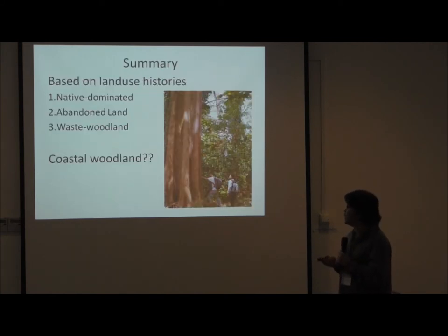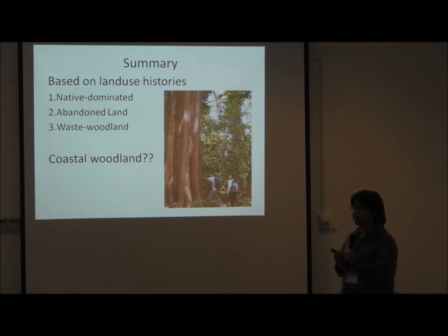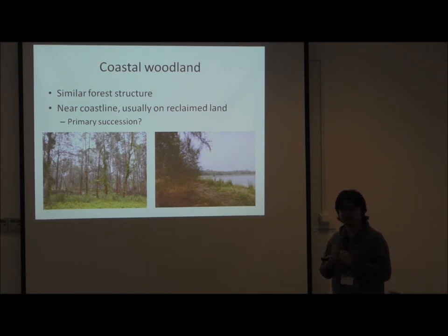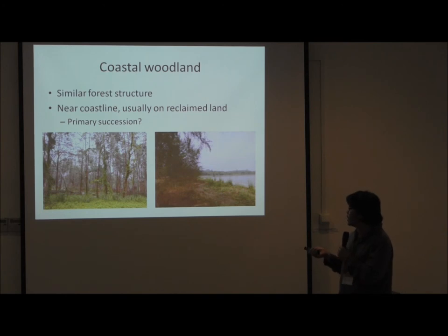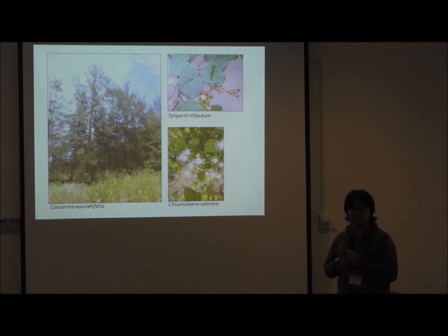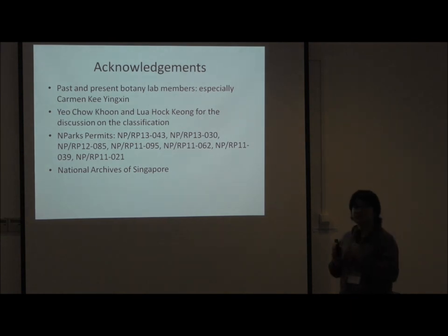In summary, we can classify secondary forest in Singapore into three main types, which dominate abandoned land and wasteland. For coastal land, they appear similar from satellite images, and from experience don't seem too different, but they are not grown from previously cleared land — instead mostly on reclaimed land, making it a primary succession context. At places like Coney Island, these forests are dominated by Casuarina, and along the beach you see sea Hibiscus. These lands are also susceptible to invasion by exotic shrubs.